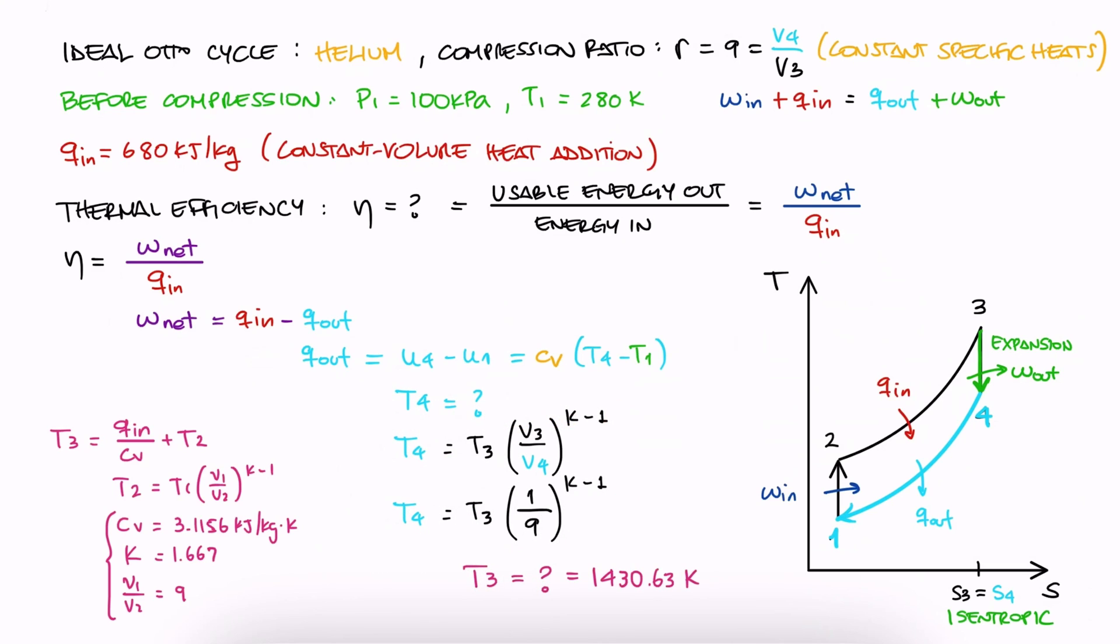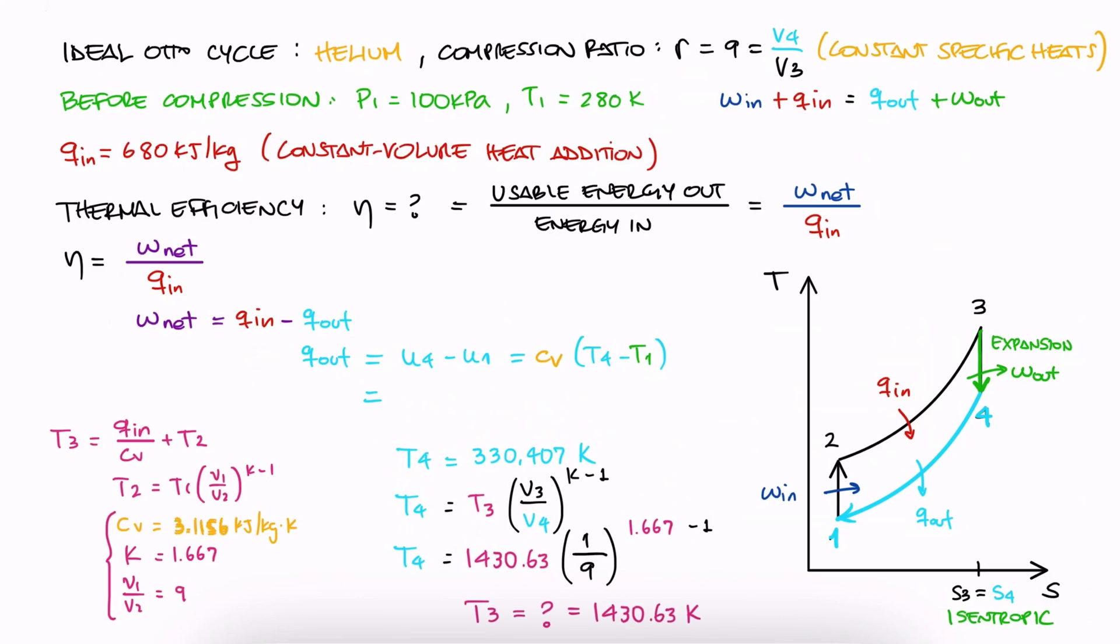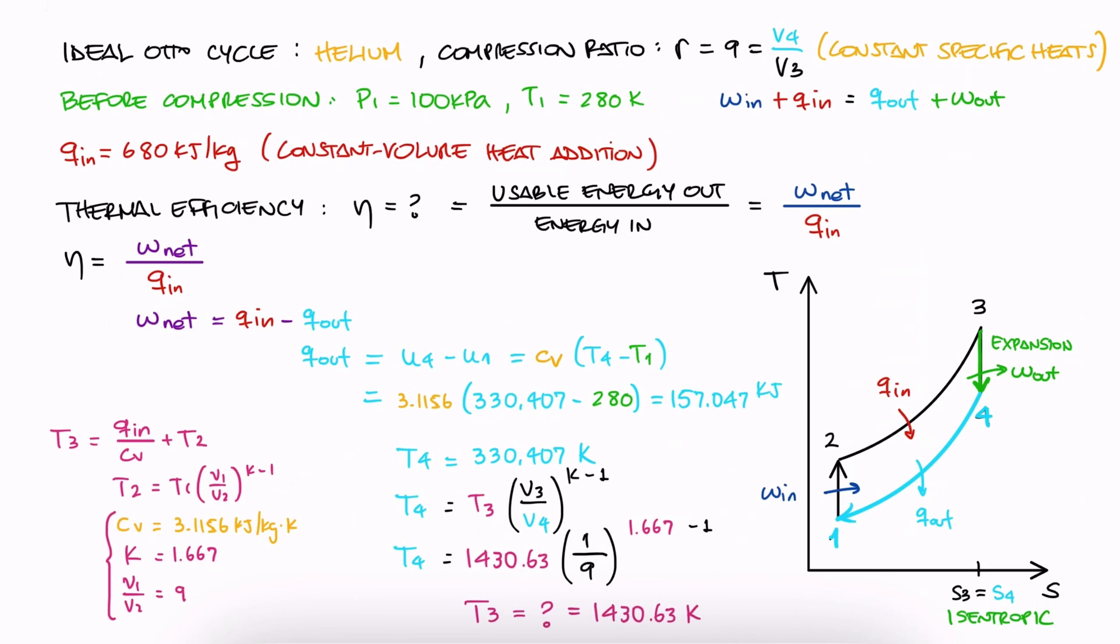Now with T3 and the specific heat's ratio K that we looked up during that process, we substitute them in the T4 expression to find T4. We then use that temperature to calculate the heat out, and with it the net work out. And since the thermal efficiency is W net over Q in given, we substitute the values to find the thermal efficiency of this cycle.